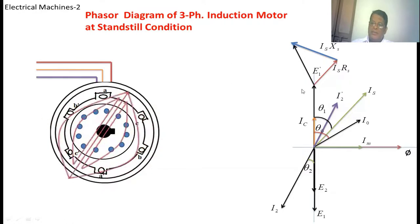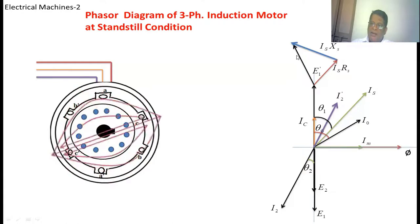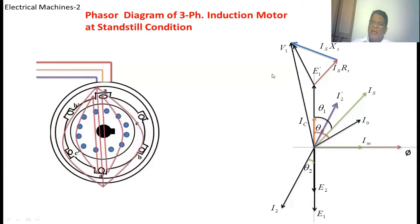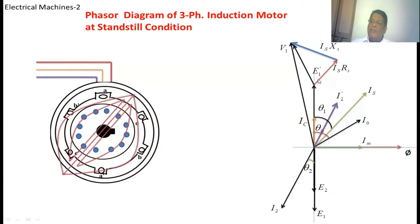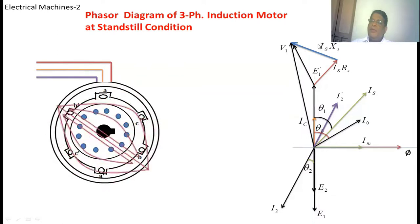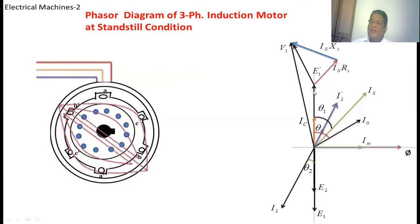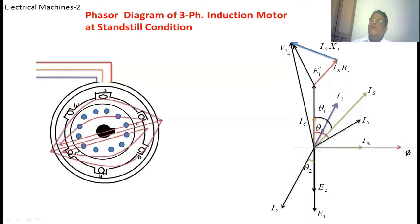The phasor sum of IS·RS and J·IS·XS is nothing but the stator impedance drop, represented with a black color vector. If we find the phasor sum of E1-dash and this stator impedance vector, that gives the applied voltage V1. So V1 equals E1-dash plus IS·RS plus J·IS·XS.